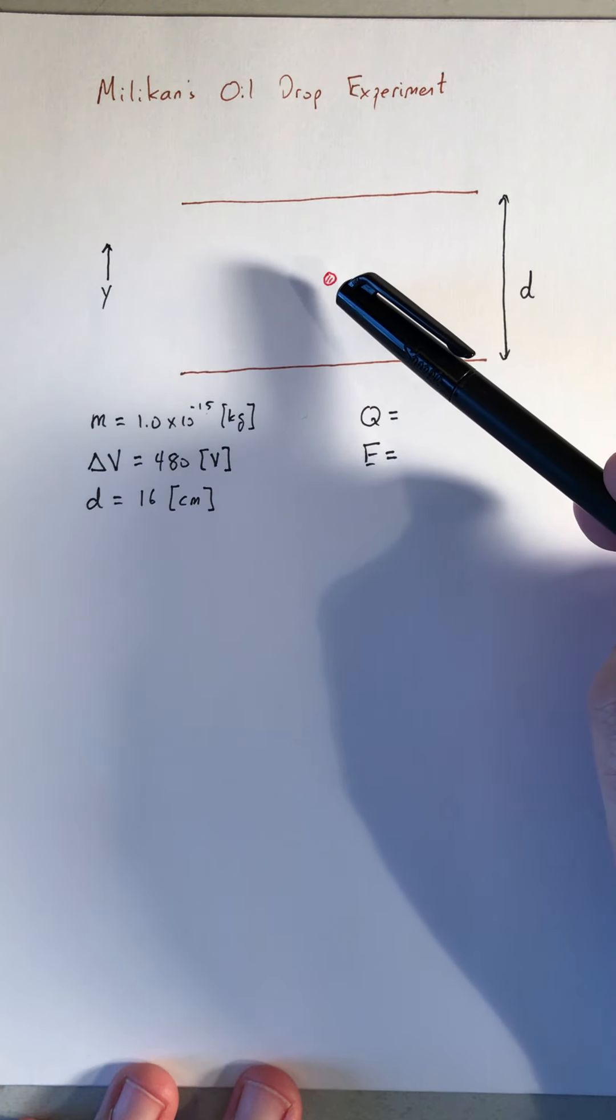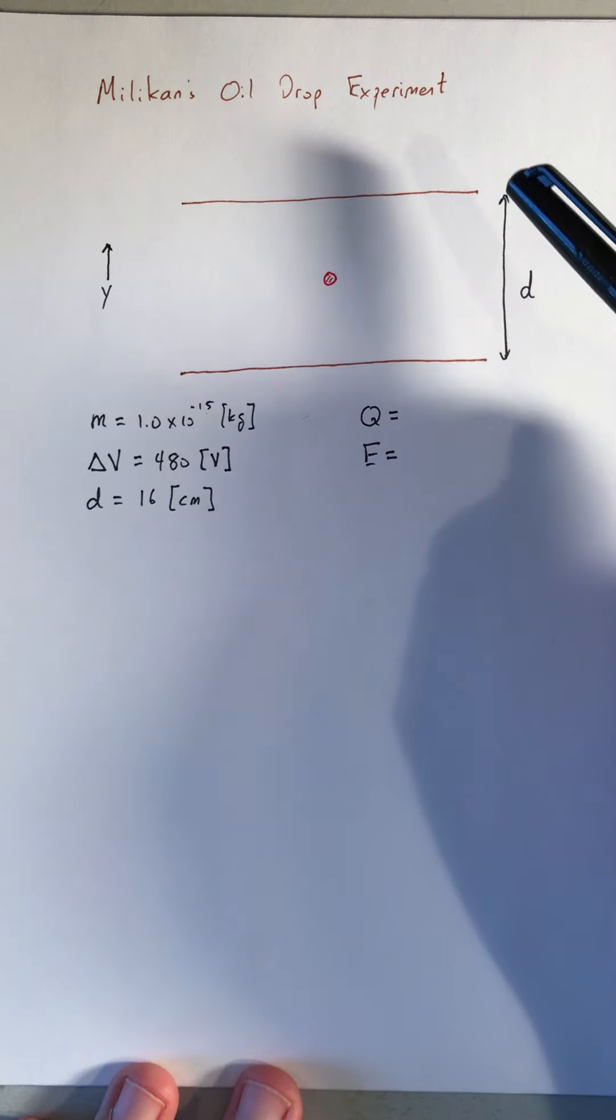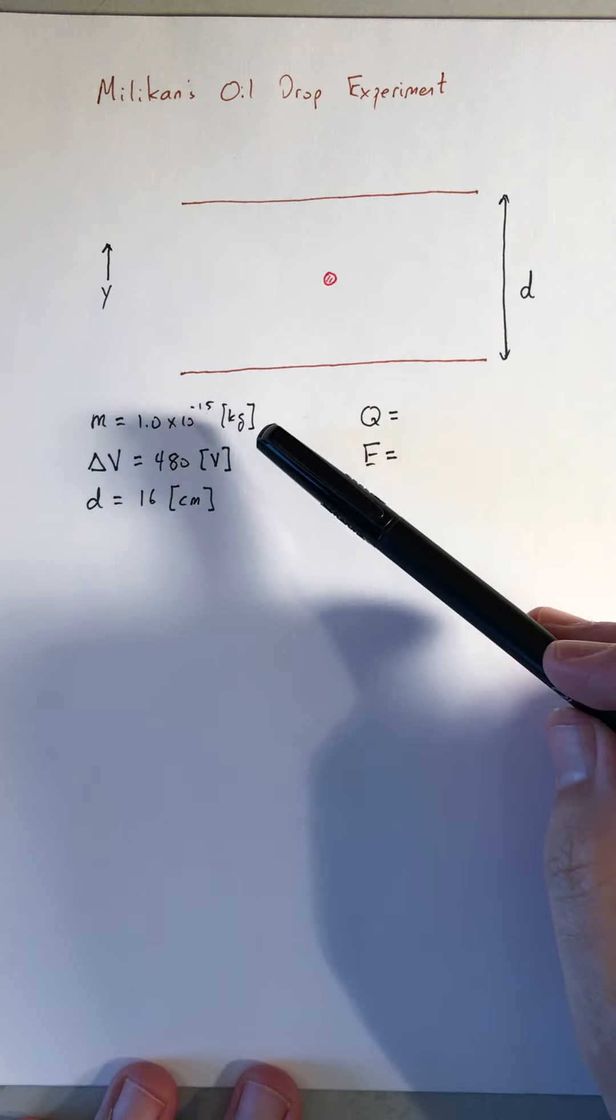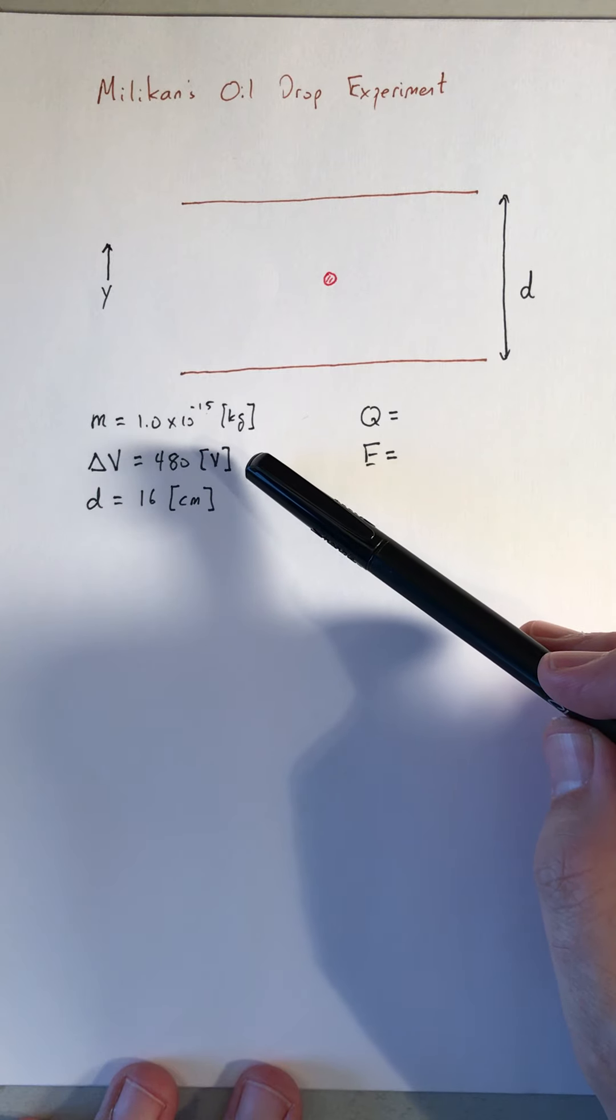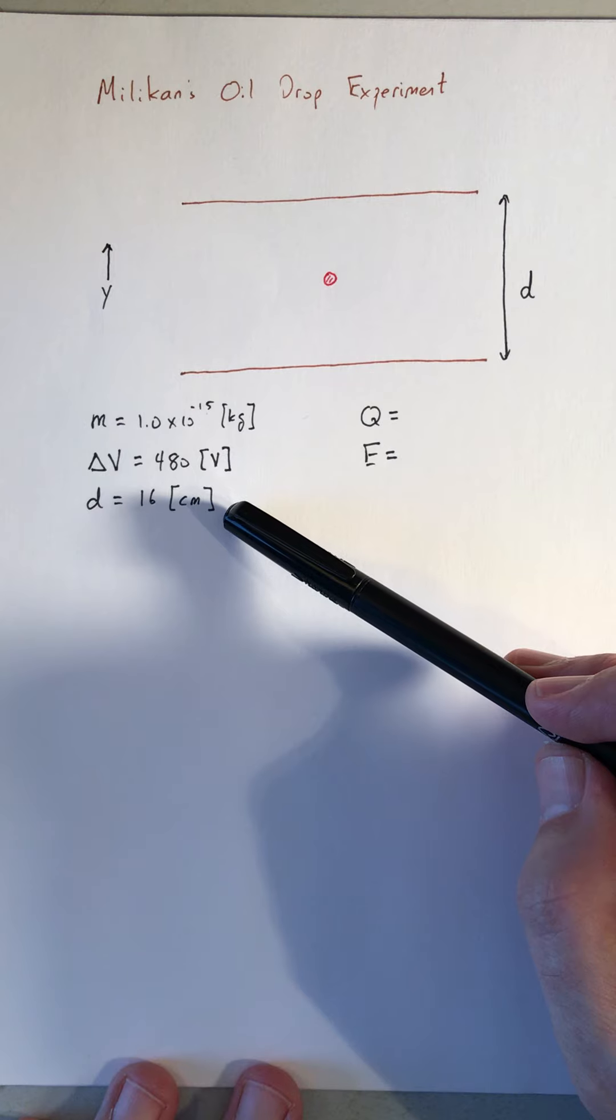In this case it's going to be motionless, so the sum of forces on it is zero. We have an estimate for the mass of the drop. We know the potential difference between the plates is 480 volts. We're going to look at that a little bit more closely. This is a big Milliken apparatus. The separation between the plates is 16 centimeters.